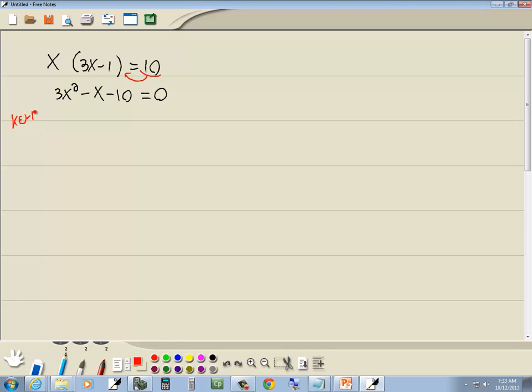This will be a key number. The reason why I know it's a key number is because we have x squared x, no x, and there's a number in front of your x squared. Now, with the key number, we take the number at the beginning times the number at the end, ignoring signs. So we've got 3 times 10 gives us 30.